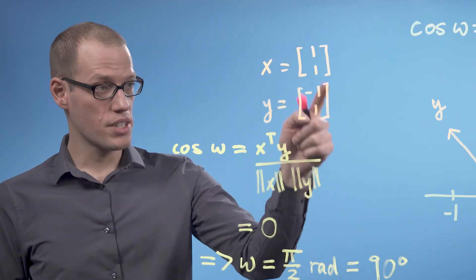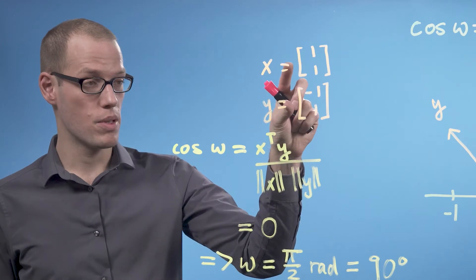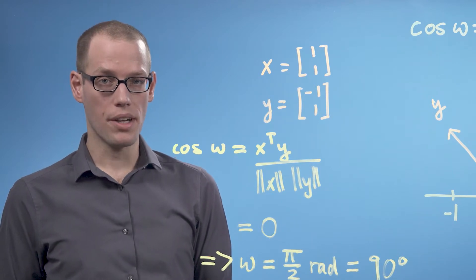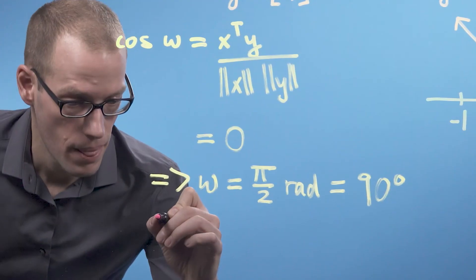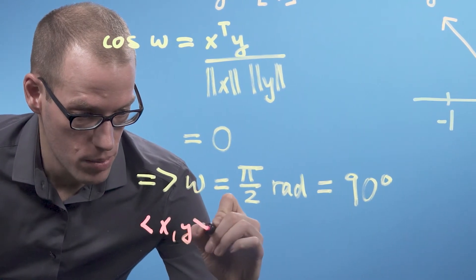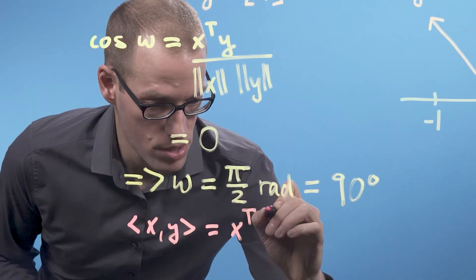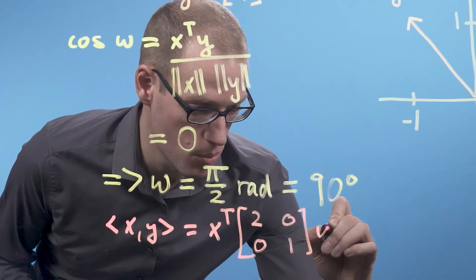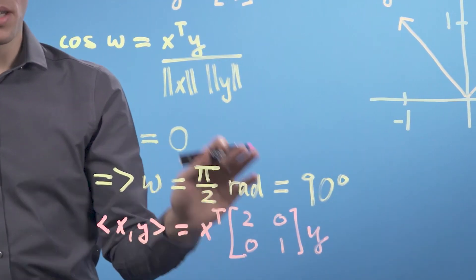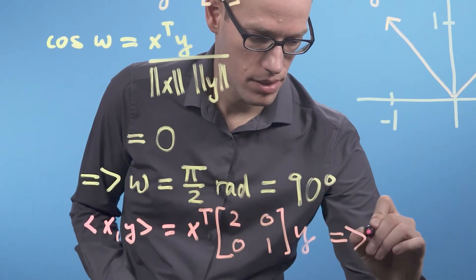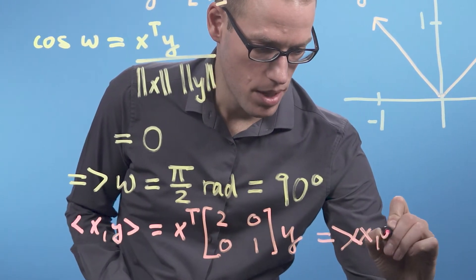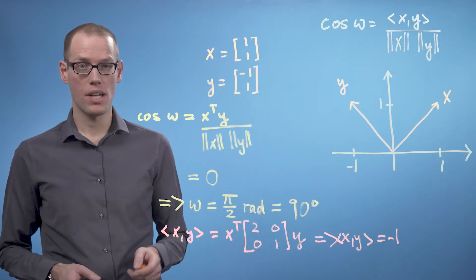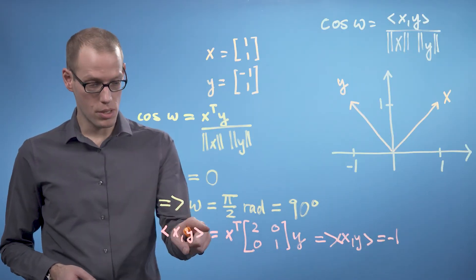Let's take these two vectors that we just had where the dot product between them gave that they are orthogonal. But now we're going to choose a different inner product. In particular, we're going to choose the inner product between x and y to be x transpose times the matrix [2,0; 0,1] times y. And if we choose this inner product, it follows that the inner product between x and y is minus 1. This means that the two vectors are not orthogonal with respect to this particular inner product.